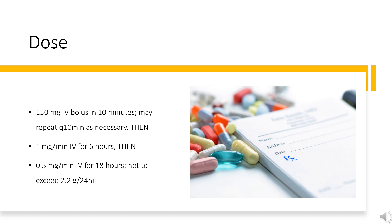IV regimen: 150 mg over the first 10 minutes (15 mg per minute), followed by 360 mg over the next 6 hours (1 mg per minute), then 540 mg over the remaining 18 hours (0.5 mg per minute), for a total of 1,000 mg over 24 hours before administering maintenance infusion. Maintenance: 0.5 mg per minute for a total of 720 mg per 24 hours, at a concentration of 1–6 mg/mL — 360 mg per 200 mL or 1.8 mg/mL (Nexterone) at a rate of 0.278 mL per minute.